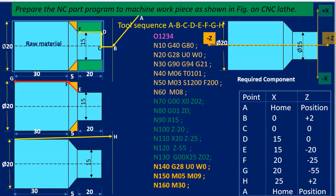The third part is the end of the program. Block N140: G28 U0 W0 — returns the tool to the home position. Block N150: M05 stops the spindle; M09 turns the coolant off. Block N160: M30 indicates program end and tape rewind, meaning the cursor returns to block N10 so the machine is ready for the next job. This is how we write facing and taper turning programs on a CNC lathe.